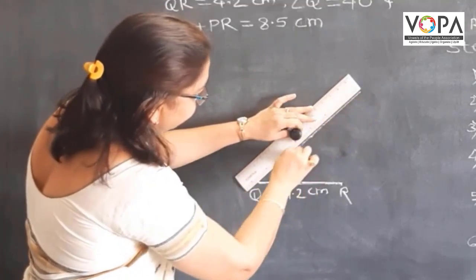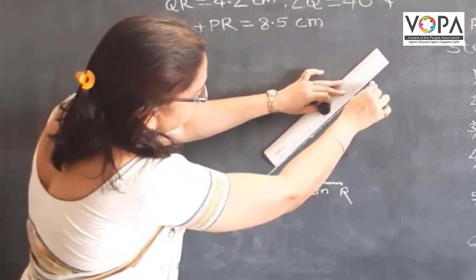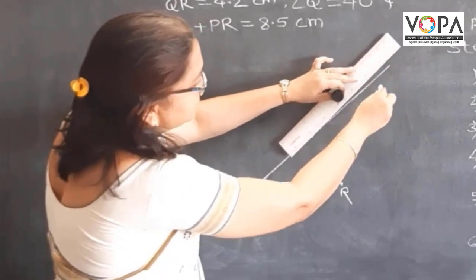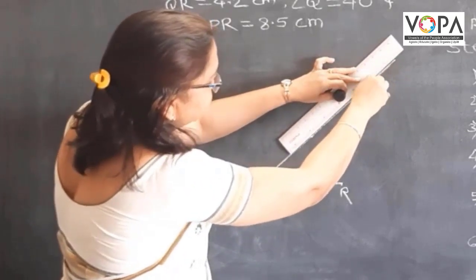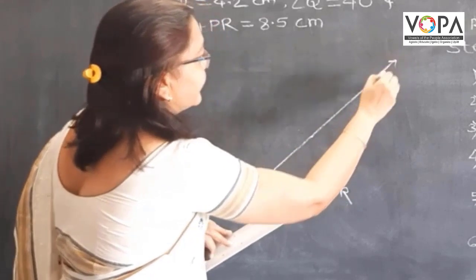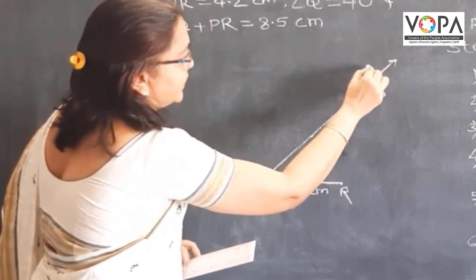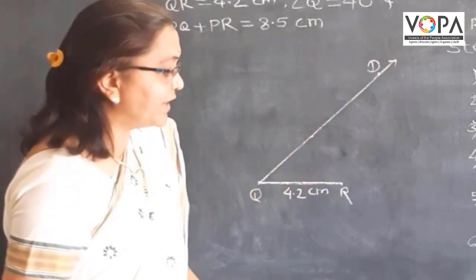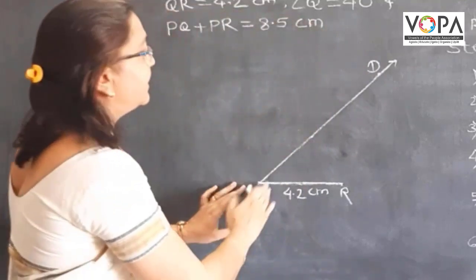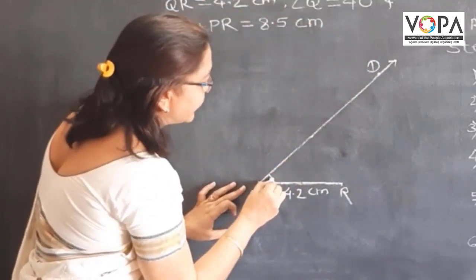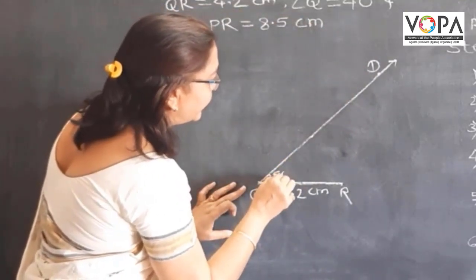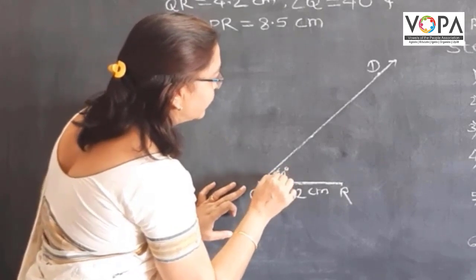Draw this ray. This is your ray QD. Fix your point D or locate the point D. This is ray QD which makes an angle of 40 degrees with the base.